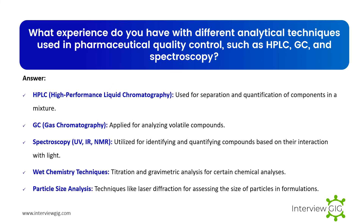What experience do you have with different analytical techniques used in pharmaceutical quality control, such as HPLC, GC, and spectroscopy? HPLC (high-performance liquid chromatography) is used for separation and quantification of components in a mixture. GC (gas chromatography) is applied for analyzing volatile compounds. Spectroscopy (UV, IR, NMR) is utilized for identifying and quantifying compounds based on their interaction with light. Wet chemistry techniques such as titration and gravimetric analysis are used for certain chemical analyses. Particle size analysis techniques like laser diffraction are used for assessing the size of particles in formulations.